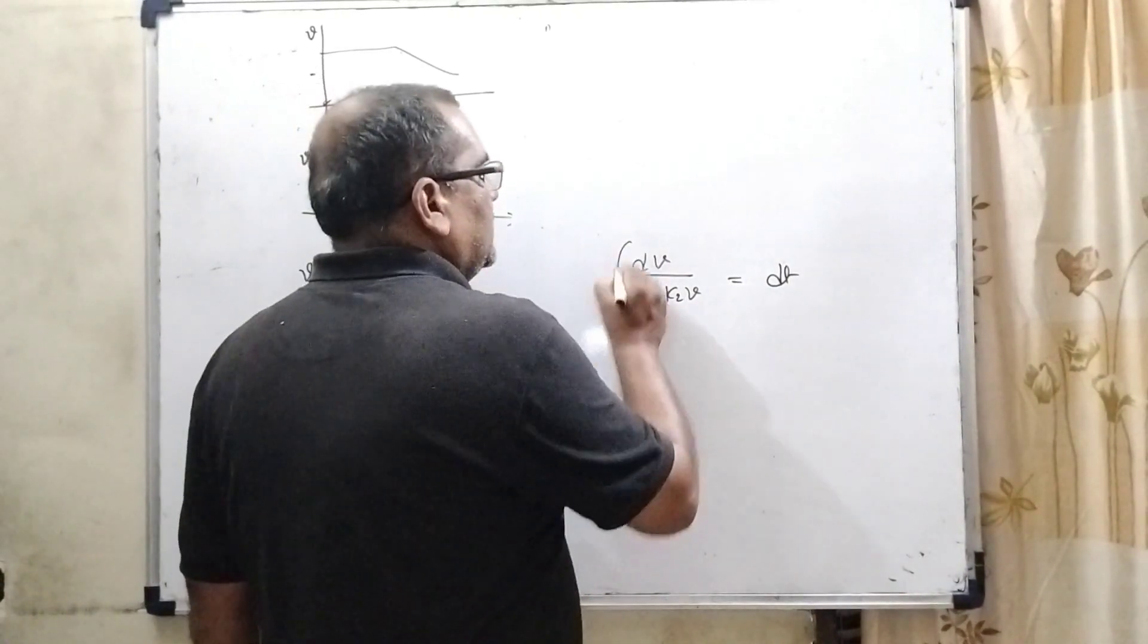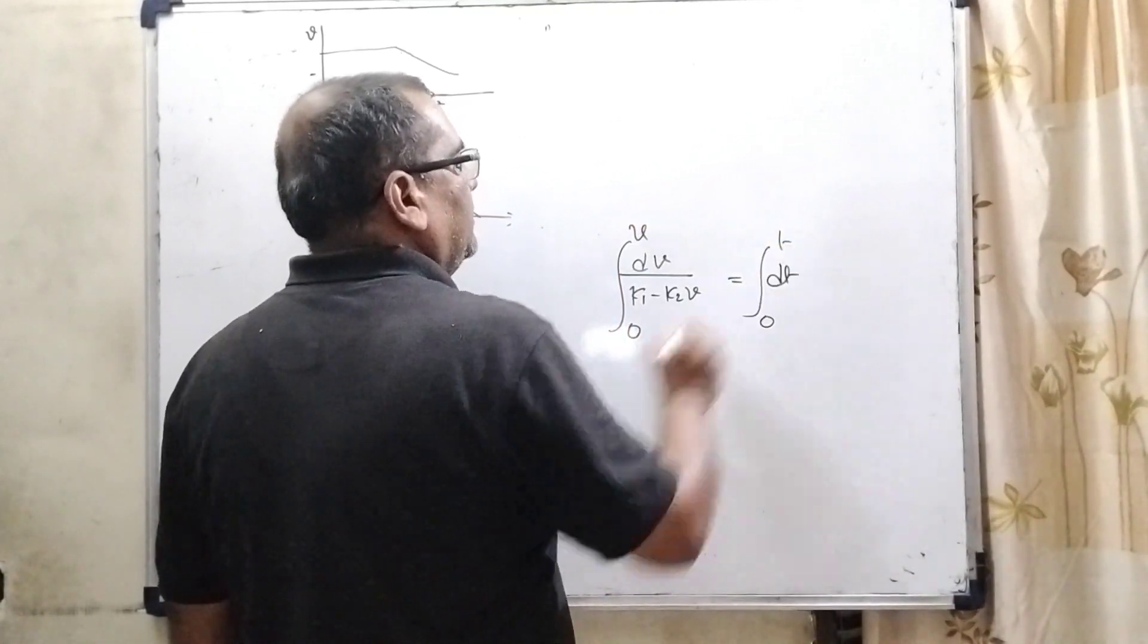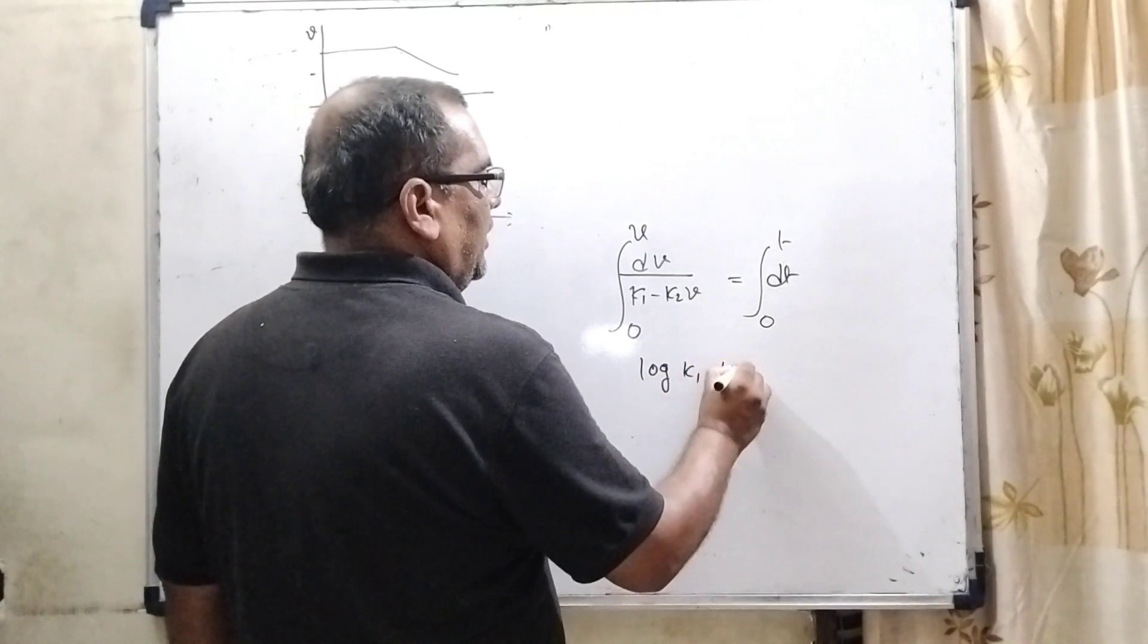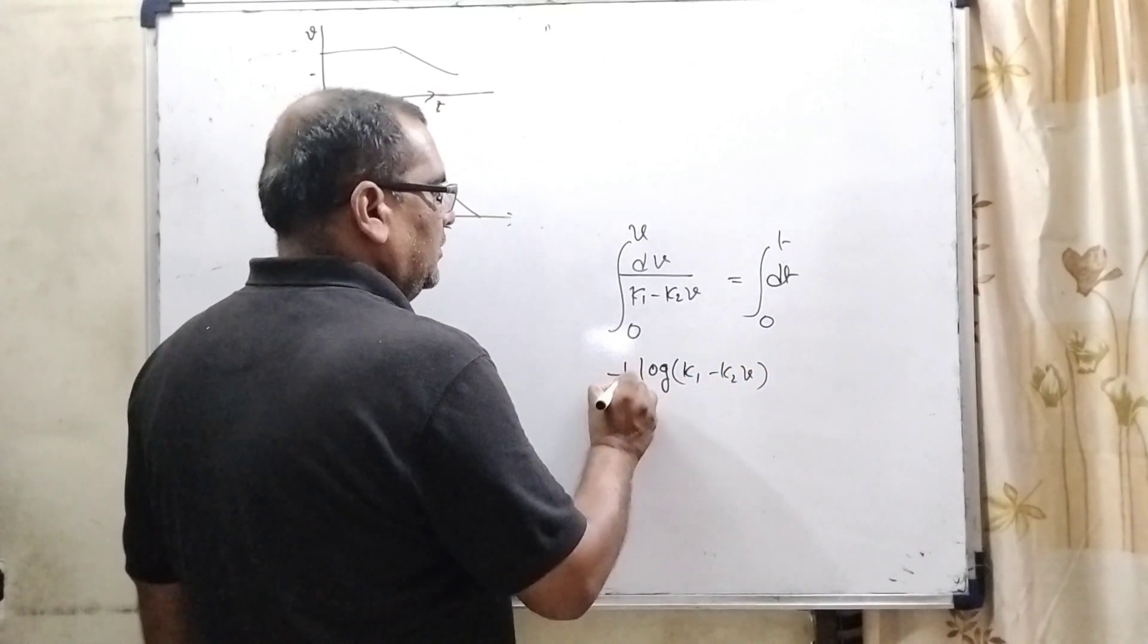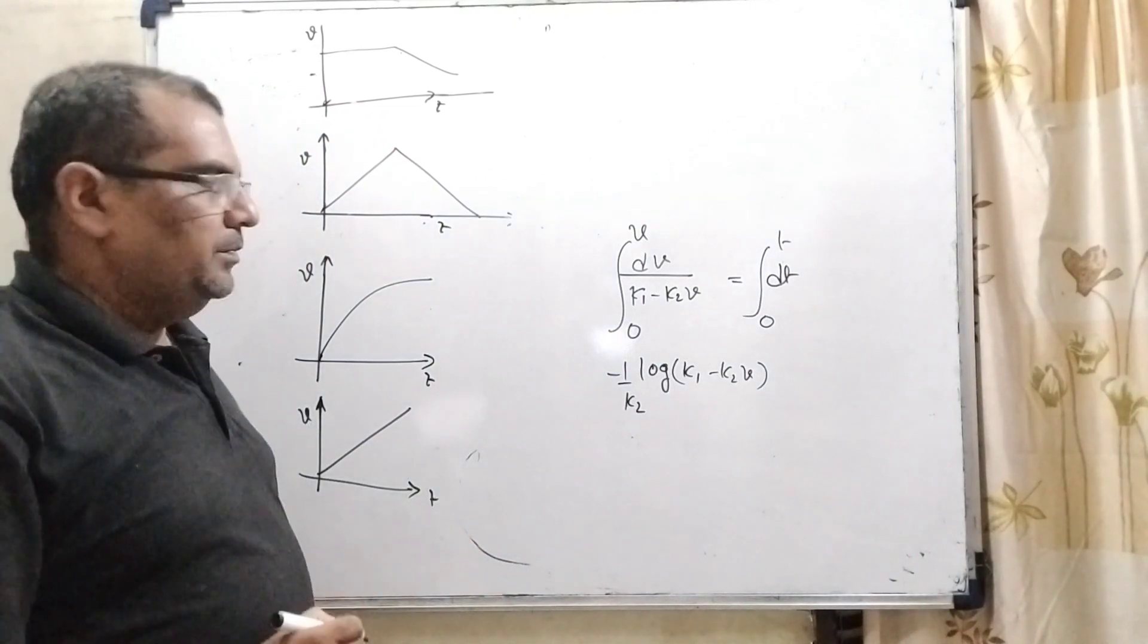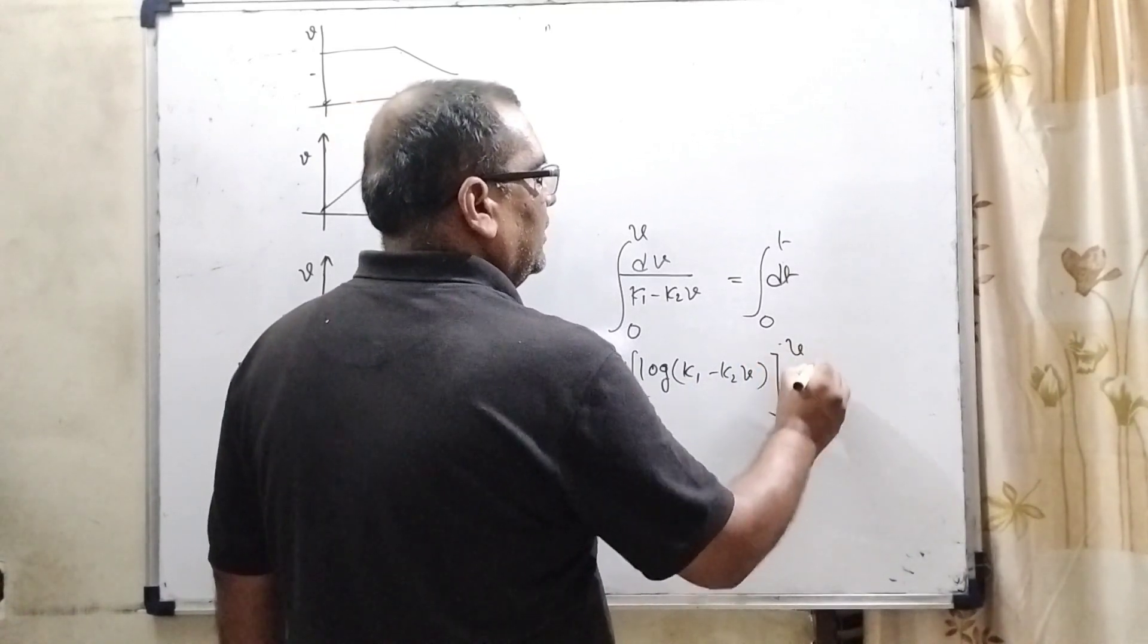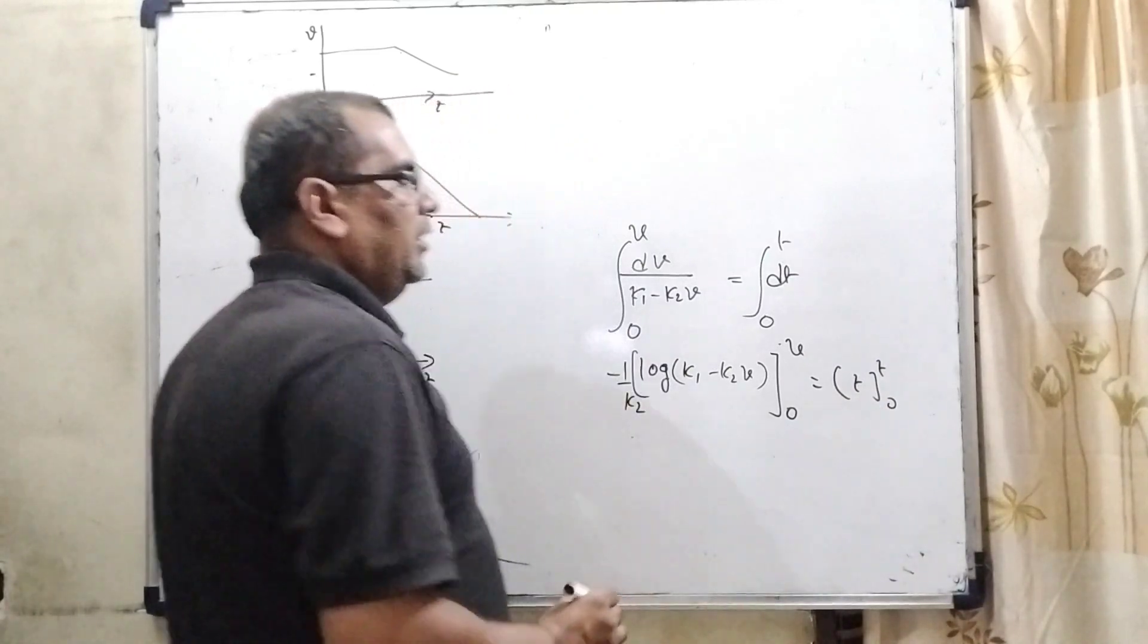Now, integrate both the sides here put the limit 0 to V here 0 to t. So, here log K1 minus K2V and coefficient is minus K2, so 1 upon minus 1 upon K2. And limit here 0 to V and here t and upper limit is t and lower limit is 0.